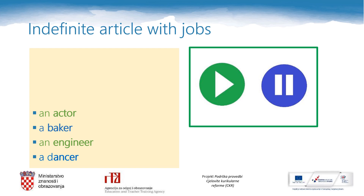A and an are indefinite articles. We always use a and an with jobs. A i an su neodređeni članovi. Sa imenima poslova uvijek koristimo neodređene članove. Your task is to think carefully and to conclude when do we use a and when do we use an. Vaš zadatak je razmisliti i zaključiti kada upotrebljavamo a, a kada upotrebljavamo an. Pažljivo pogledajte četiri riječi na ekranu i pokušajte sami zaključiti kada upotrebljavamo koji neodređeni član.